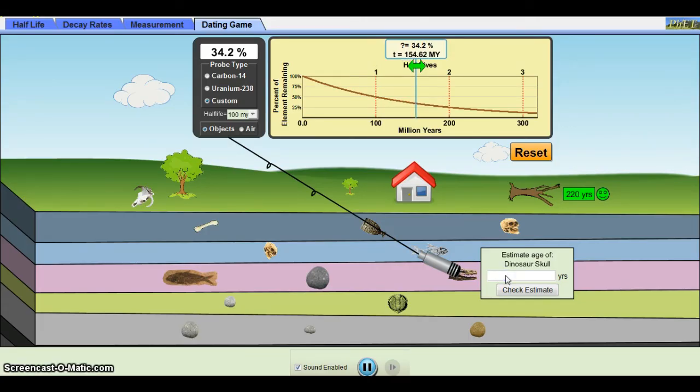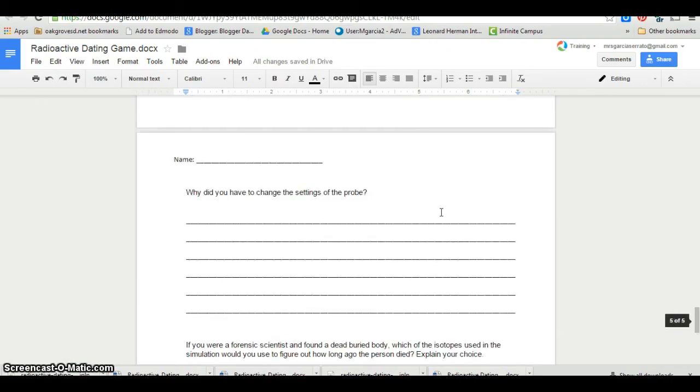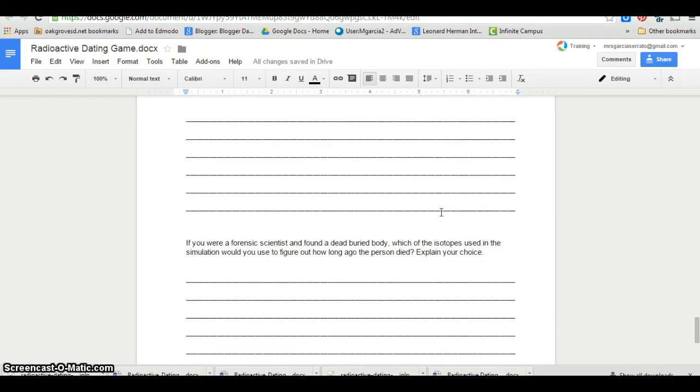Make sure students realize that they have to type in the whole number in order to get their smiley face. At the end of their record sheets, there are a couple of critical thinking questions that I suggest are discussed between partners before they commit the answers to paper.